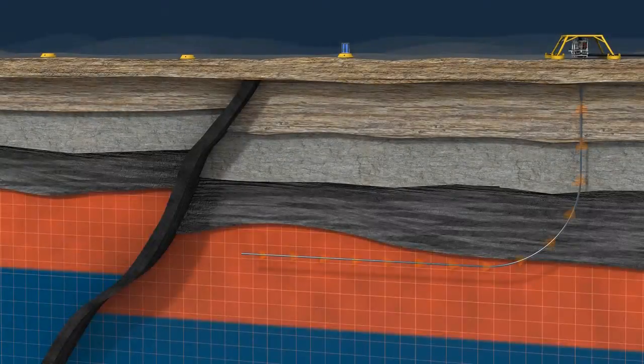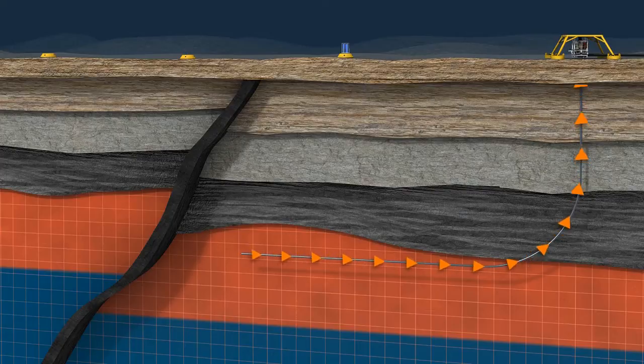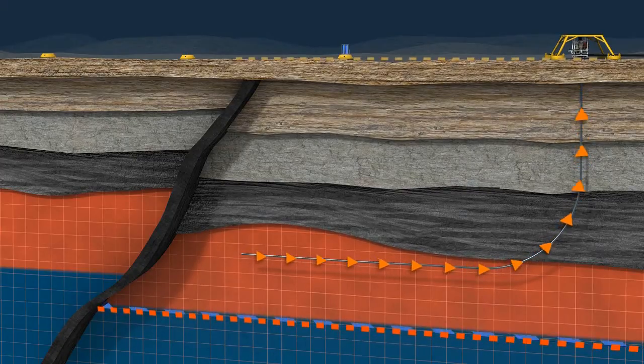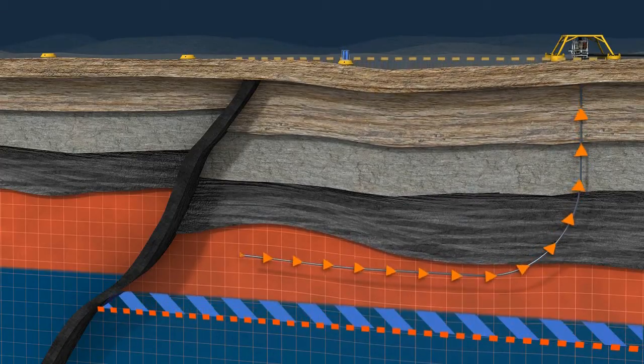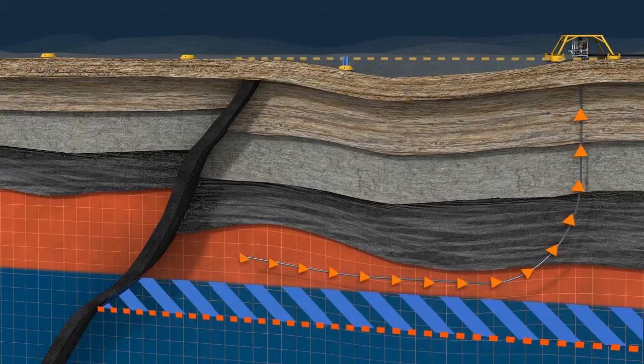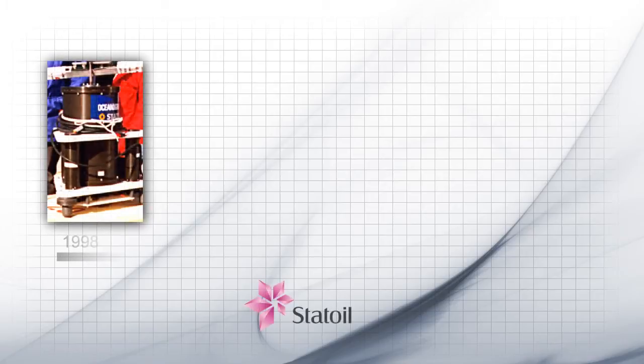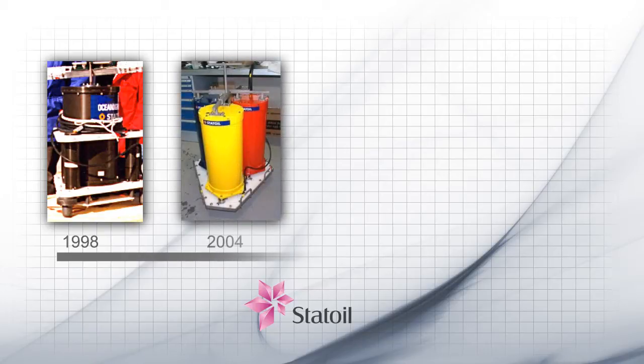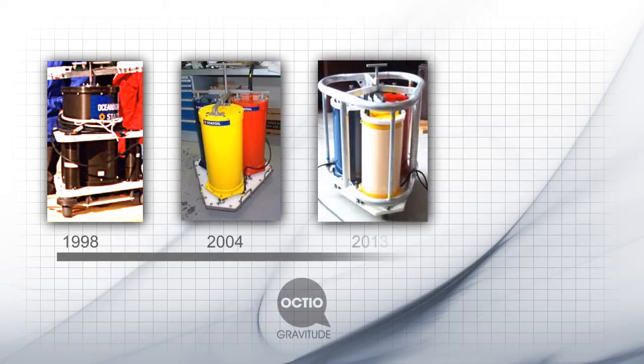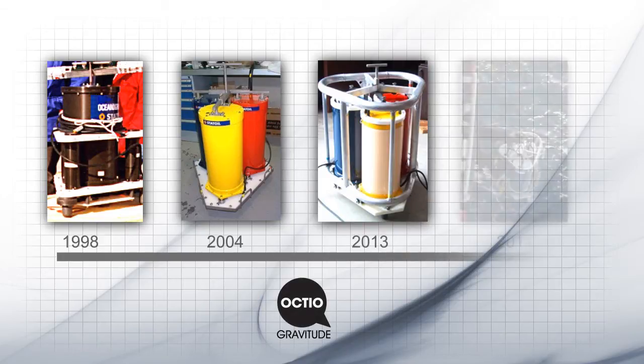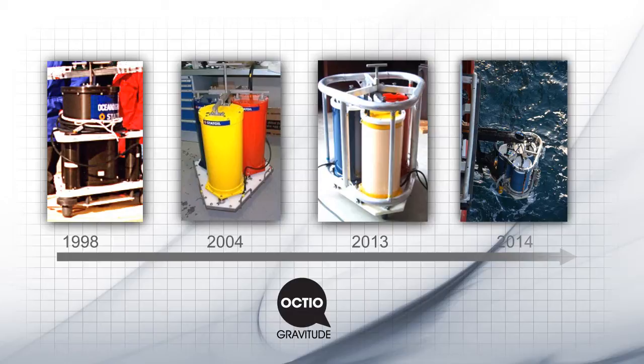The gravimeter from Octiogravitude accurately measures pressure and gravity, enabling accurate monitoring of the fluid flow in the reservoir. The Octiogravitude technology was pioneered by Statoil from 1998 to 2013 with field studies at seven locations. In 2013 this technology was transferred to Octiogravitude for further development and commercialization and was finalized in 2014 following repeat surveys and optimization of the equipment.